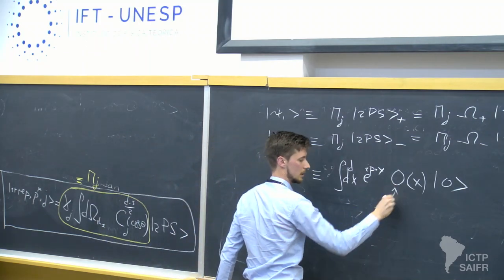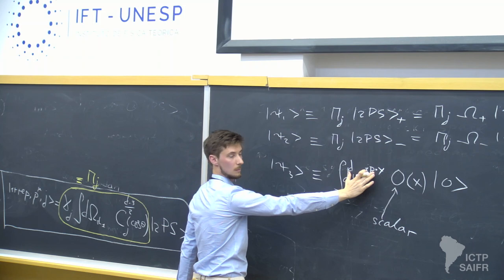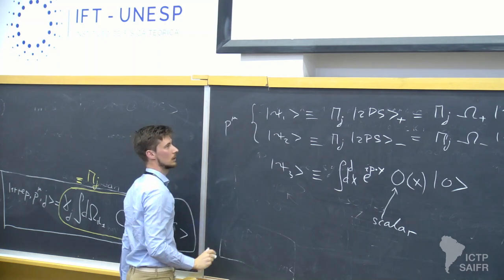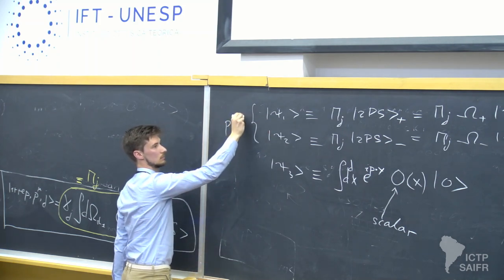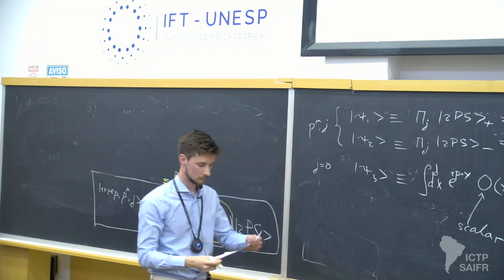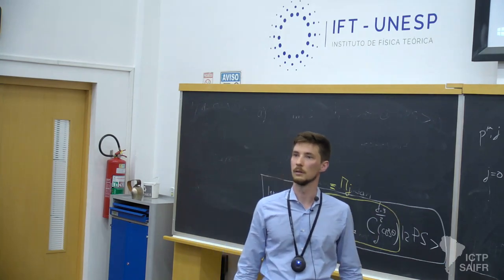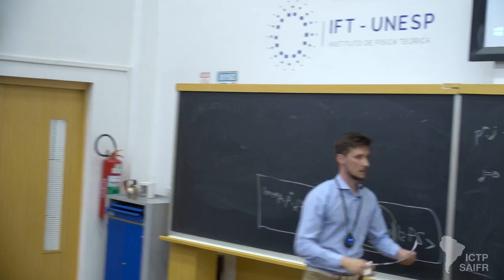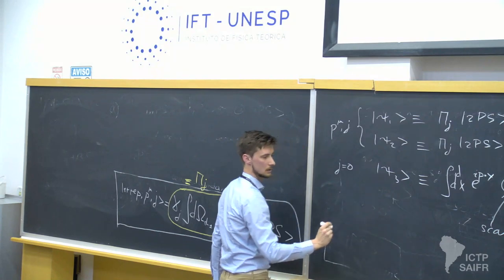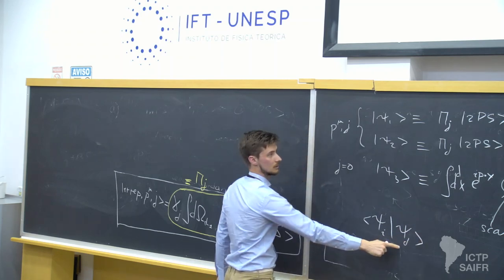O is the scalar operator. After the Fourier transformation, this state will have total momentum P. These two other states also have total momentum P. Those states have spin J. In general, this third state has spin J equal to zero because of the scalar operator. What I would like to study are the inner products of these three states — Psi_I with Psi_J, where I and J run from one to three.